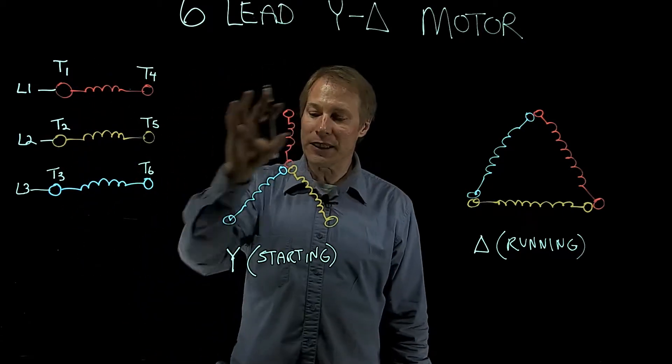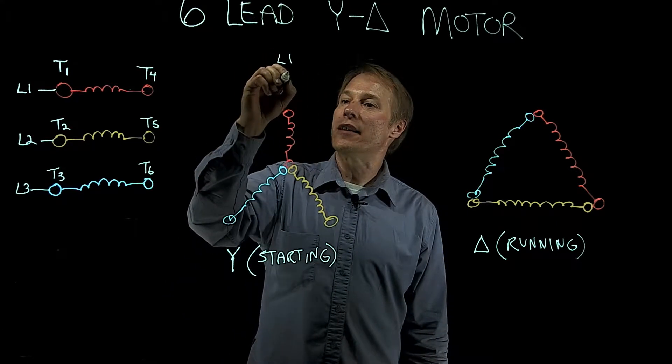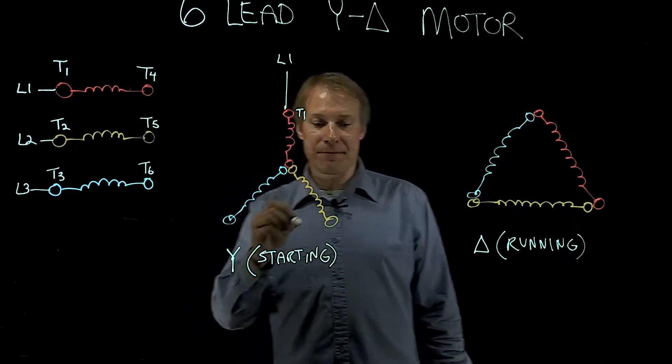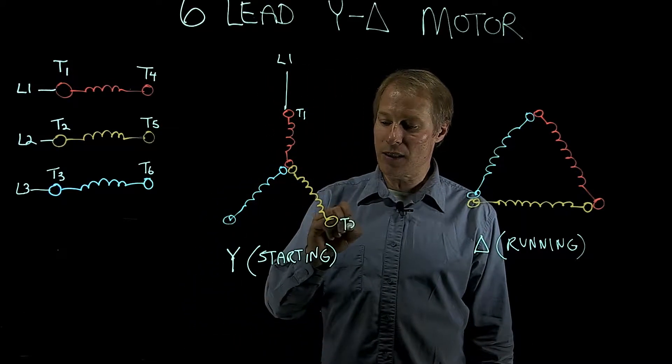Now let's go to this Y connection at start. If L1 is here, it's going to connect to T1. And let's just look at the line connection. So this is T2, always connecting to L2.